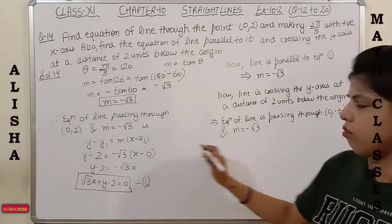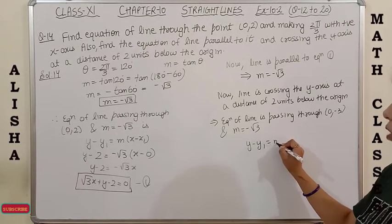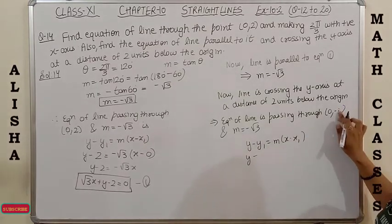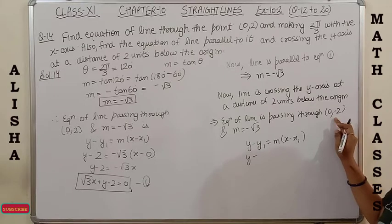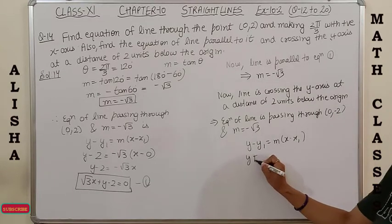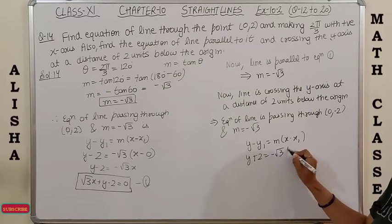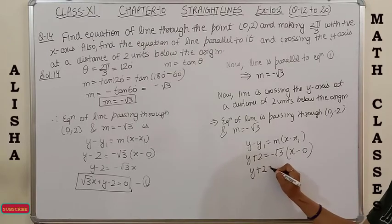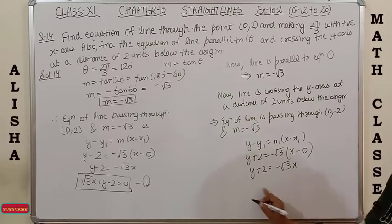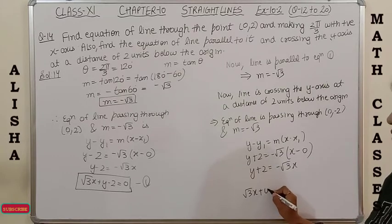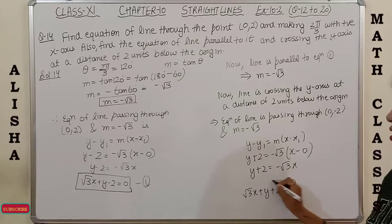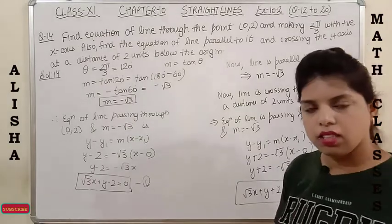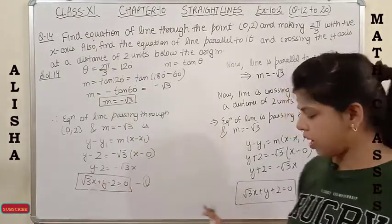Using y − y₁ = m(x − x₁) with (0, −2) and m = −√3: y − (−2) = −√3(x − 0), giving y + 2 = −√3x. Rearranging: √3x + y + 2 = 0. Notice the coefficients of x and y are the same in both parallel line equations.